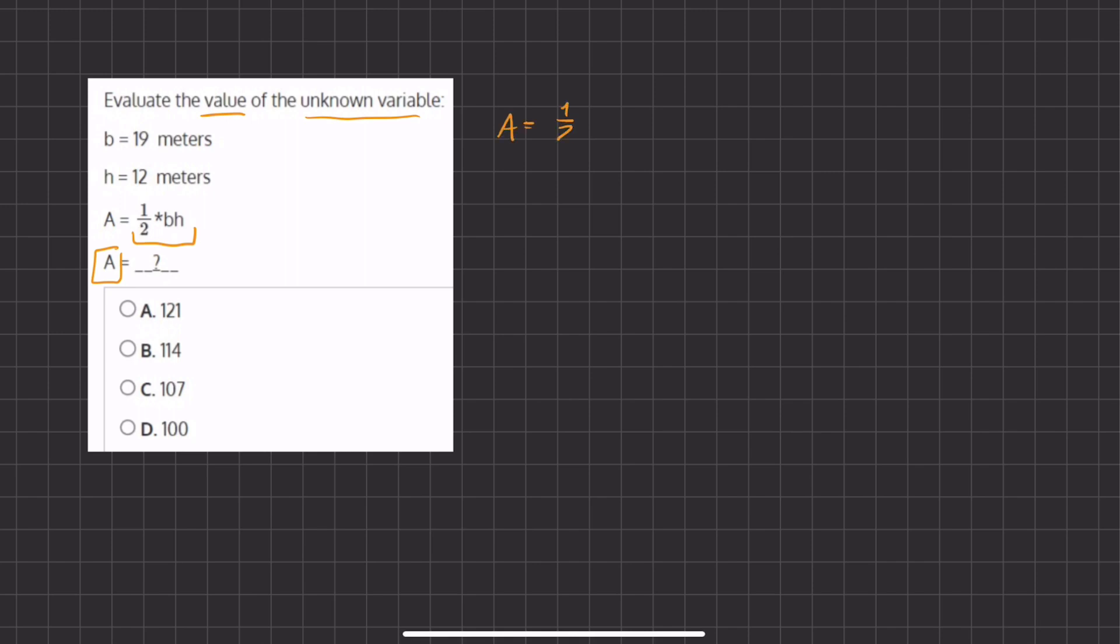So we have A equals half times b, which is 19, times h, which is 12.